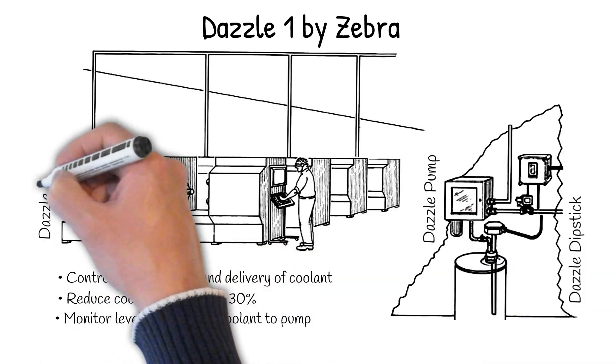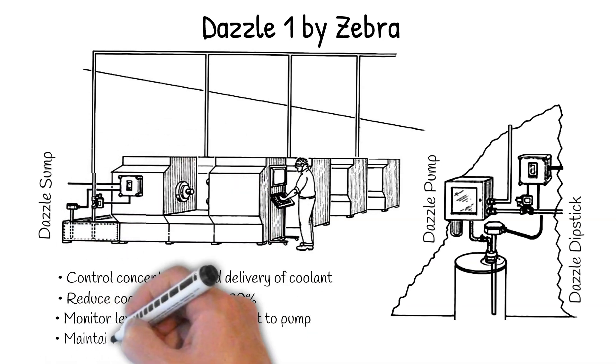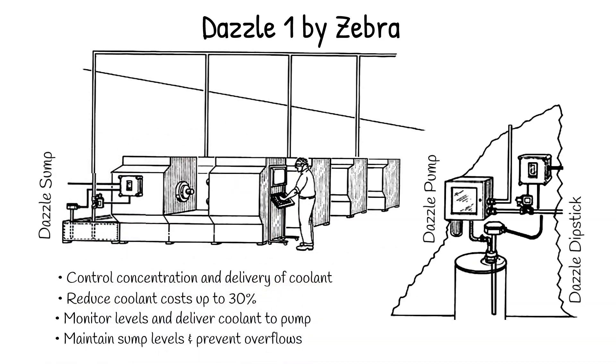The Dazzle Sump, a programmable controller that maintains sump levels at optimal field-defined set points to within centimeters, preventing overflows and putting an end to bucket brigades.